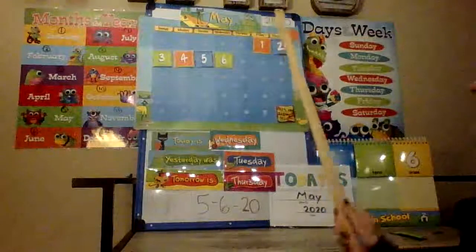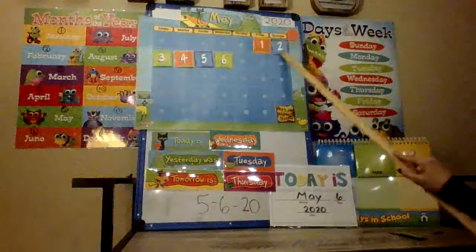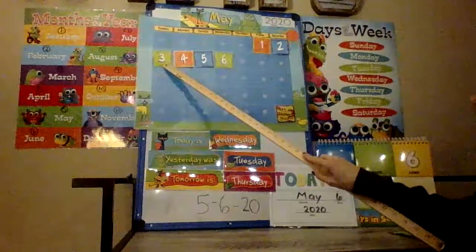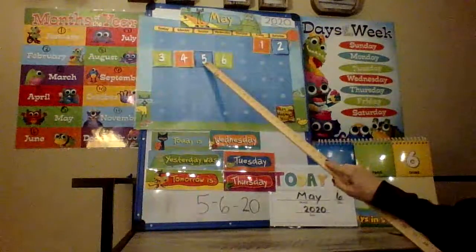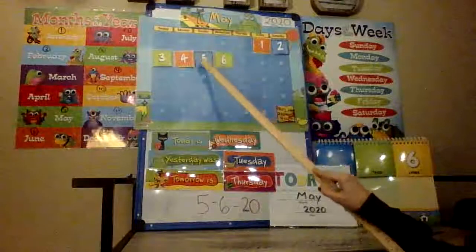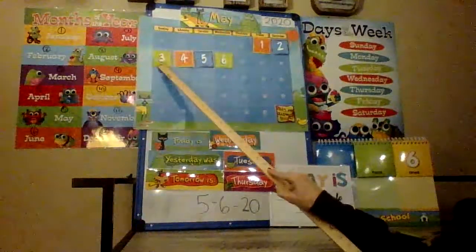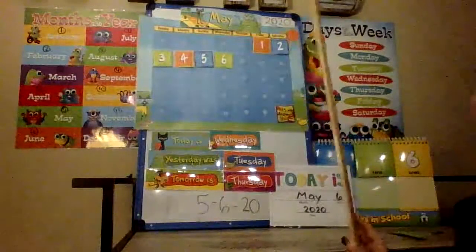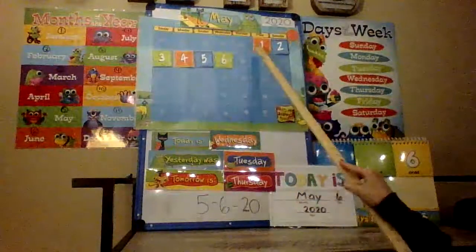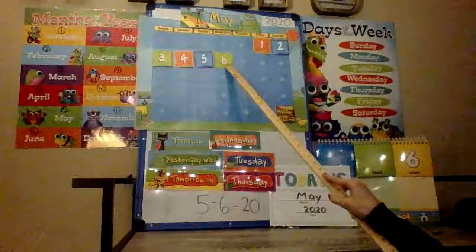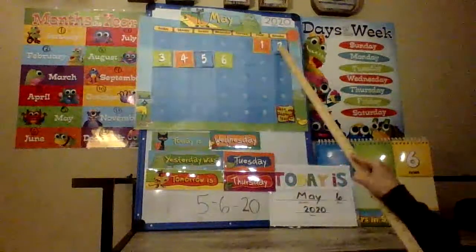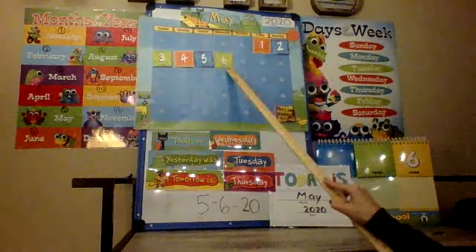Let's count the days forward. Ready? One, two, three — did I get anybody? I haven't tricked you in a while, I was hoping I got somebody. Four, five, six. Great job. Let's count the days backwards. Ready? Six, five, four, three, two, one. We're not at Blast Off yet. All right, let's do out of order: four, one, six, three, two, four, two, five, six. Great job.